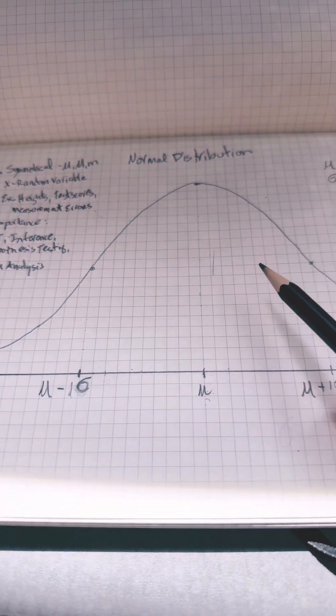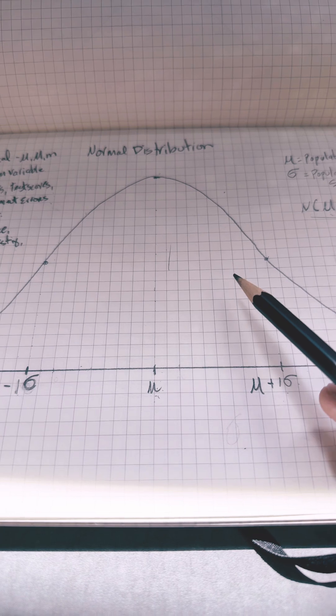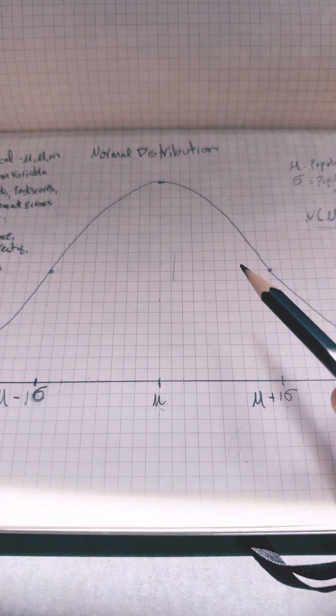This curve represents different things like heights, test scores, measurements of errors. You'll see it in nature a lot.